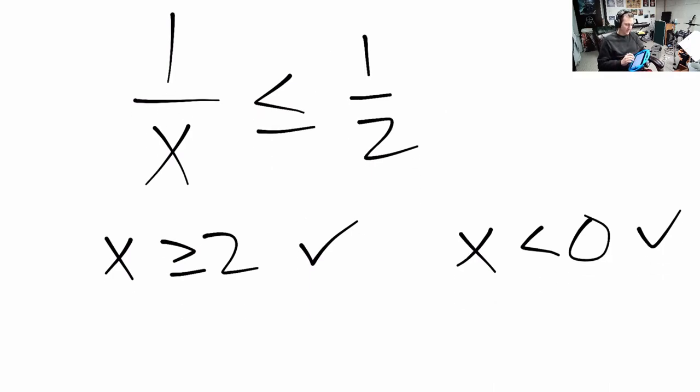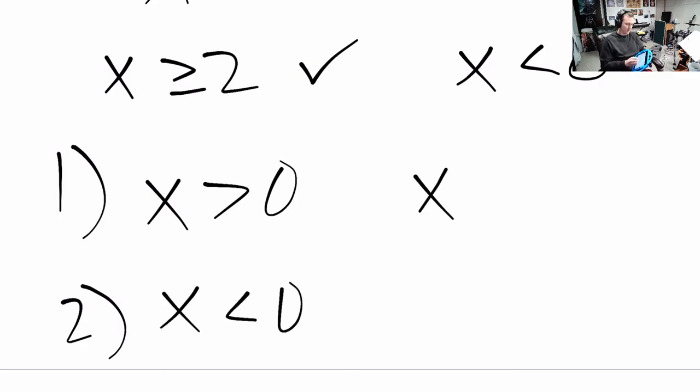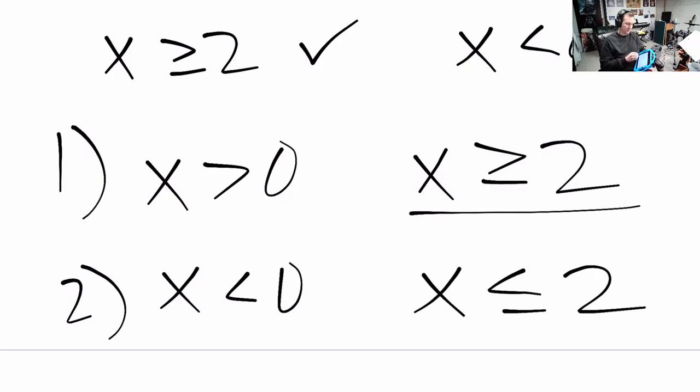So there we have it. We had to divide this up into two cases. Case one, x is positive. Case two, x is negative. The first one gave us a non-contradictory answer. We picked those positive numbers which are bigger than or equal to 2, which is all of them. In the second case, we picked those negative numbers which are less than or equal to 2, which just so happens to be only the negative numbers. And that's it.